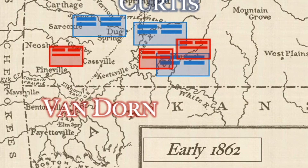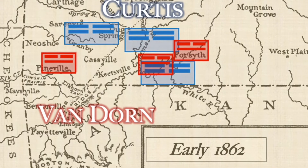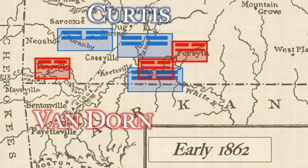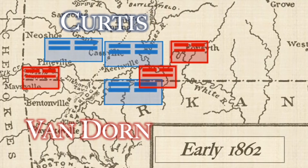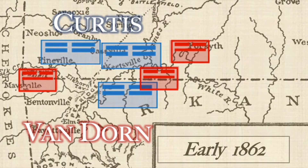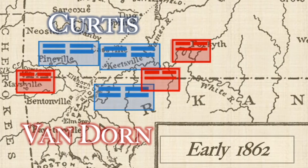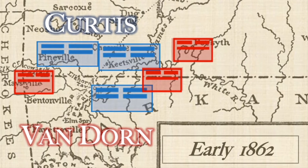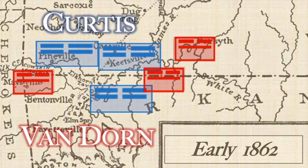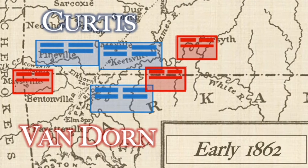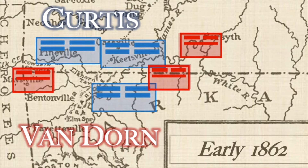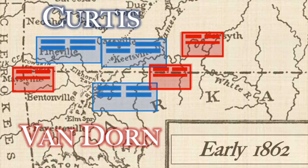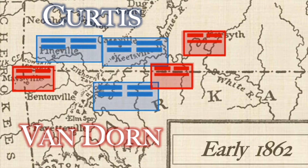Curtis moved his 10,000 federal soldiers to try and flank Van Dorn. Van Dorn, in turn, tried risky maneuvers to cut off the Union's supply lines at Bentonville, splitting his unit into two. As Curtis pushed the Missouri State Guard back into Arkansas, the battle lines were drawn around Pea Ridge near Leetown, so that by early March, Van Dorn's forces were in two different parts of the ridge and vulnerable to attack.